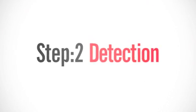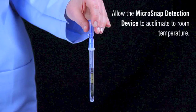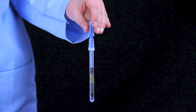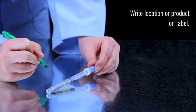The second step is detection. Allow the detection device to acclimate to room temperature before testing begins. Write the location or product on the swab tube label for easy identification.